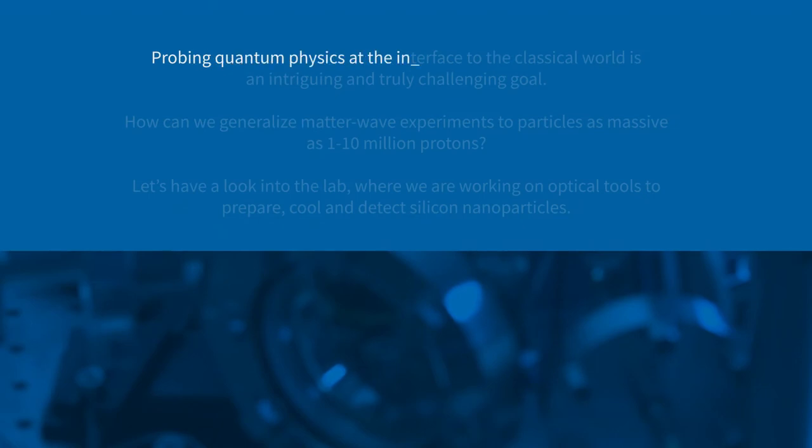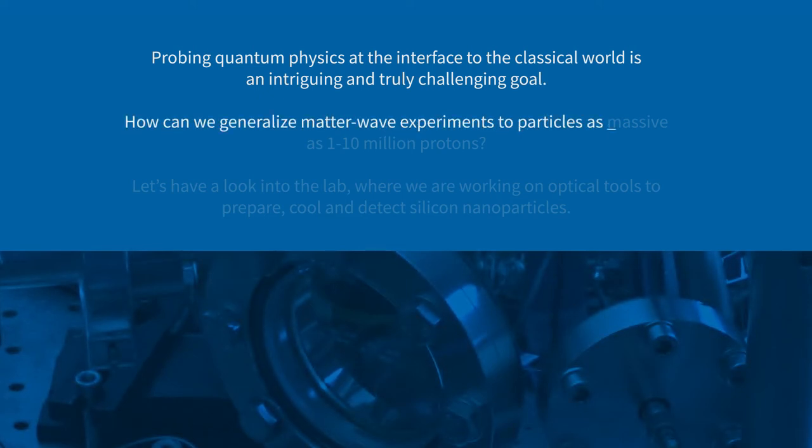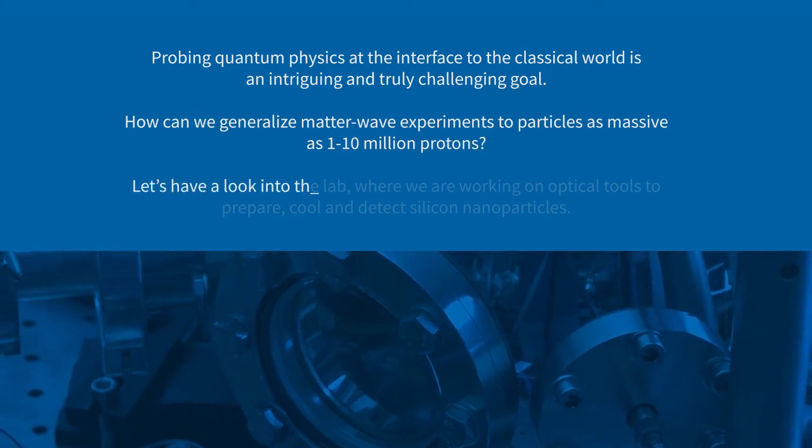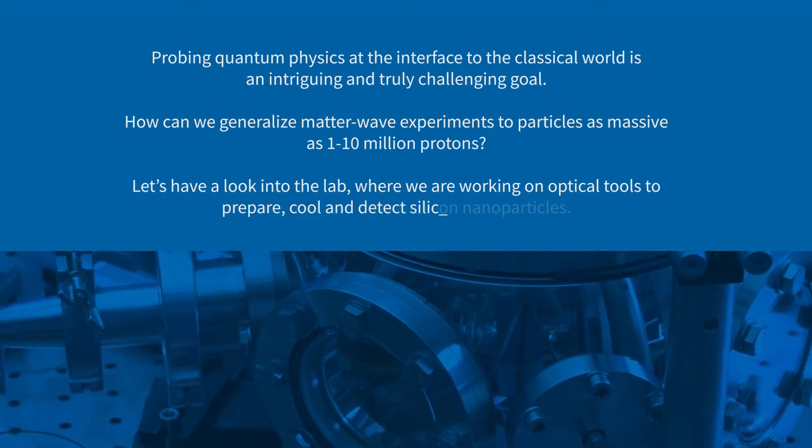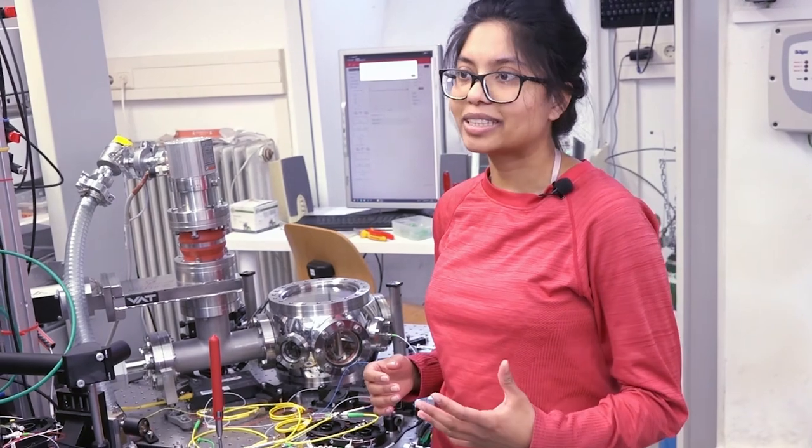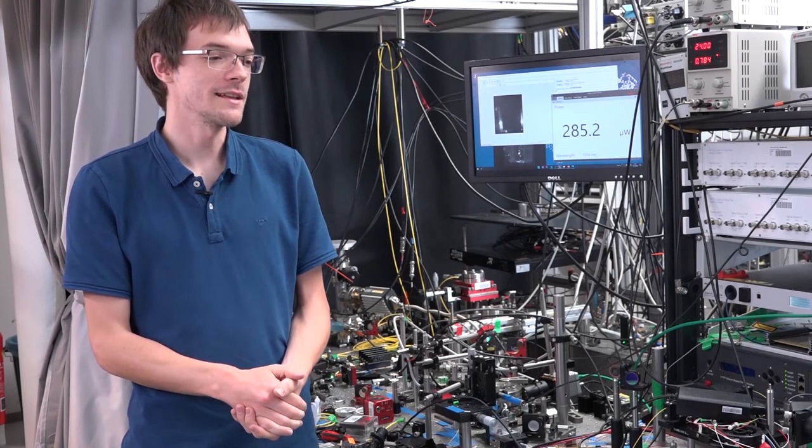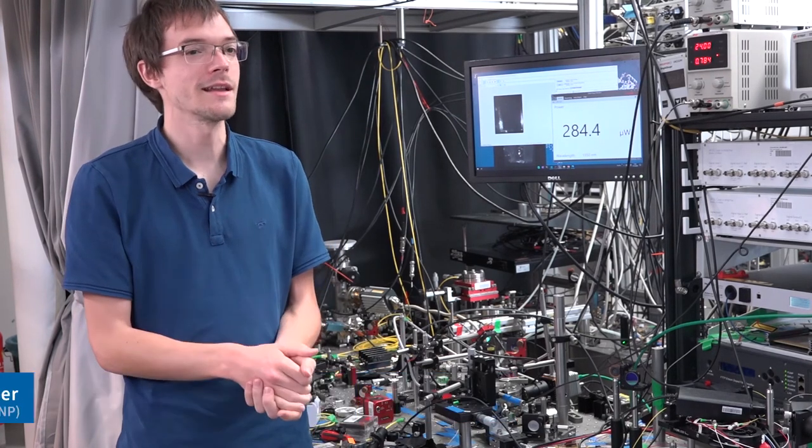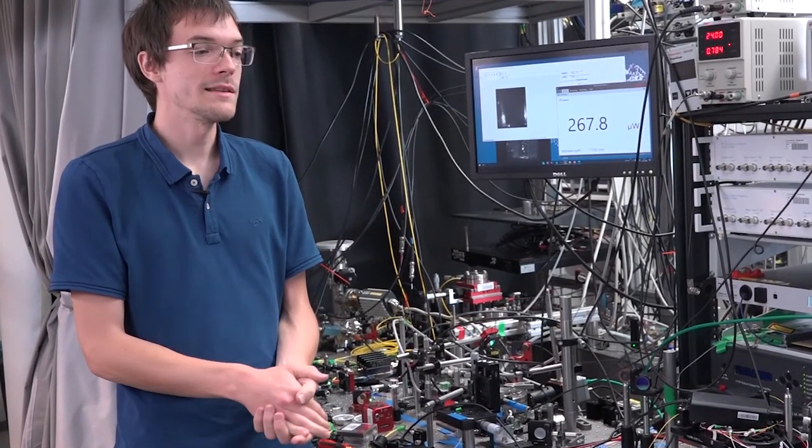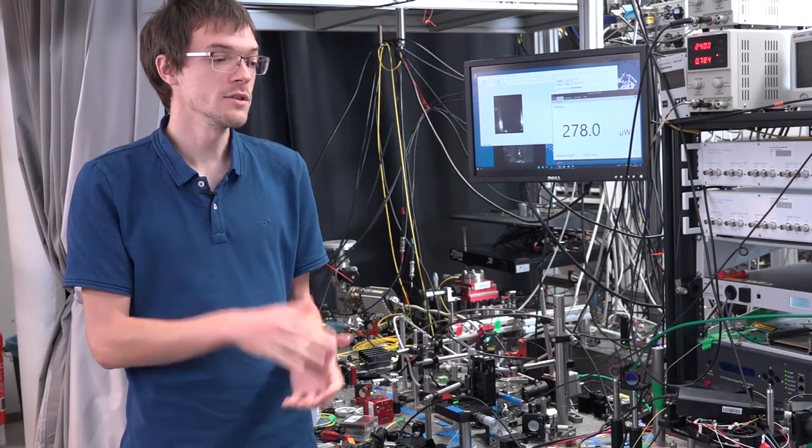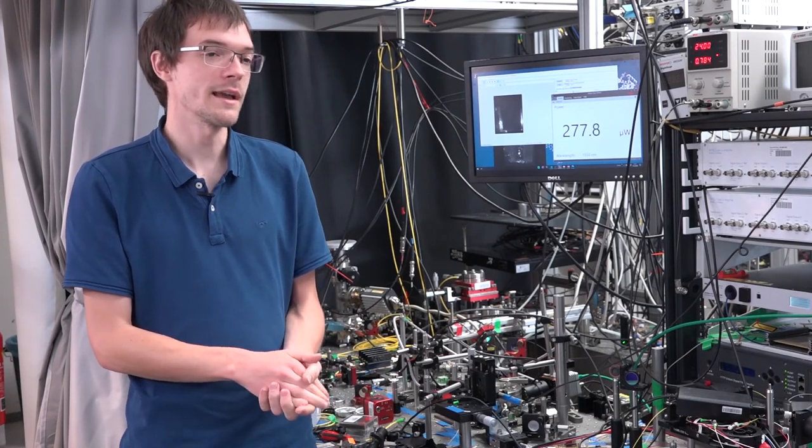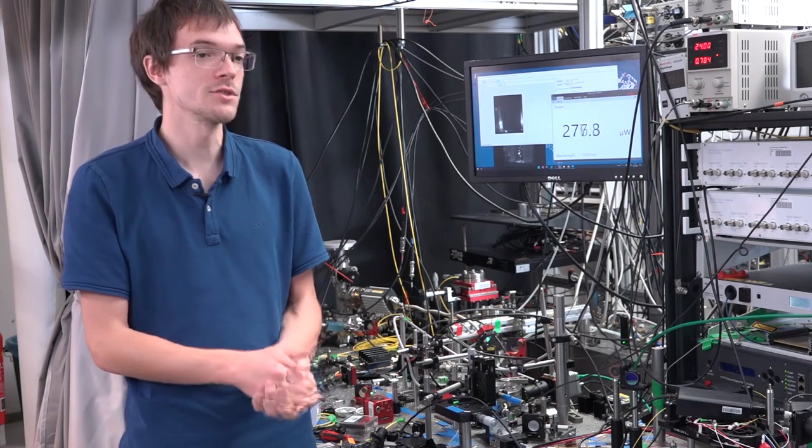Probing quantum physics at the interface to the classical world is an intriguing and truly challenging goal. How can we generalize matter wave experiments to particles as massive as 1 to 10 million protons? Let's have a look into the lab. We're working on optical tools to prepare, cool and detect silicon nanoparticles. Cooling of nanoparticles can be achieved in different controlled laser systems. Our team has already achieved the cooling of these nanoparticles by Sisyphus cavity cooling in a controlled way. In this experiment, we're aiming for nanospheres and nanorods with a mass on the order of 1 million to 10 million atomic mass units. We think that quantum experiments with widely delocalized matter waves should be in reach. One could use such particles for novel tests of quantum mechanics, for example continuous spontaneous localization and the search for dark matter.